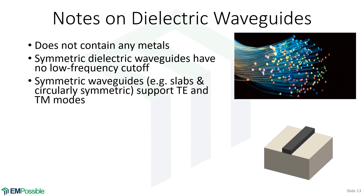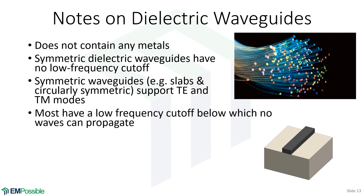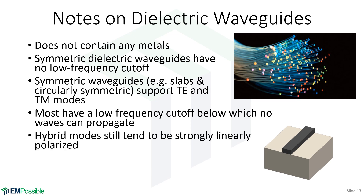If there's symmetry — slabs that are uniform along a direction or something cylindrical with cylindrical material symmetry — those can support TE and TM modes. Most modes in dielectric waveguides, except the lowest order mode, will have a cutoff frequency below which waves can't propagate. Hybrid modes — which I prefer to call full wave or full vector modes — contain all six field components. In a dielectric waveguide, even though they contain all six field components, they tend to be very strongly linearly polarized, which leads to approximations that simplify the math.